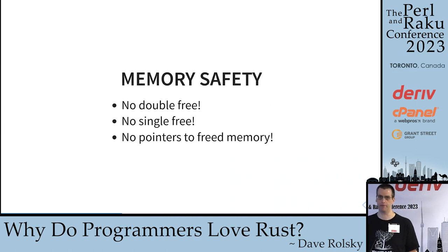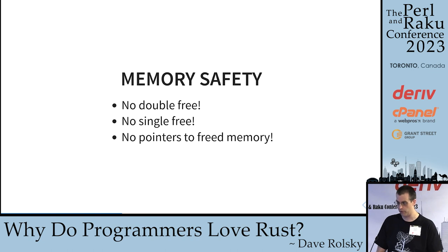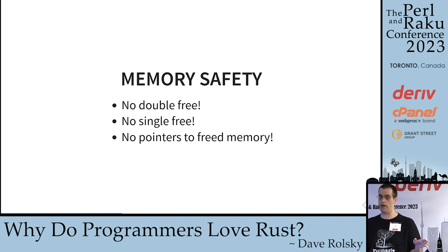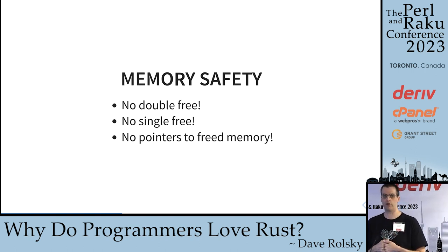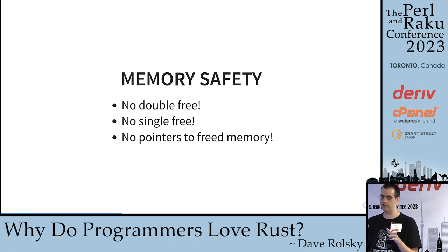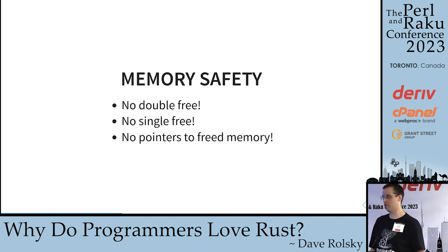It also has other forms of memory safety. There's no double free — that's because there's no single free; you don't have to free memory, it does it for you. You can't really make pointers to freed memory. I should qualify this: there's a thing called 'unsafe' in Rust where you can completely violate all these things. The idea when you write unsafe code is you're going to manually uphold these invariants. Most of the time you don't need to write unsafe code — it's most common for extreme performance scenarios or when interfacing with C and C++ code.